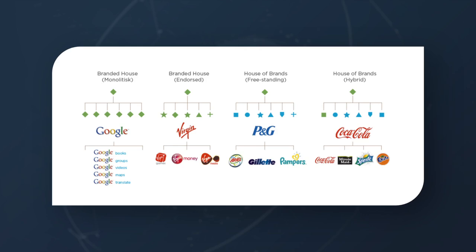Endorsed brand means there's still a strong connection to the parent brand, but there might be a different logo, different colors or fonts, or a unique style — it's still associated with the parent brand. Freestanding brand means there's completely no relation to the parent brand, and to the consumer it might not be clear that there's a parent brand behind it — such as with the Bumble example. And then there can be a combination of these, which is a hybrid model.